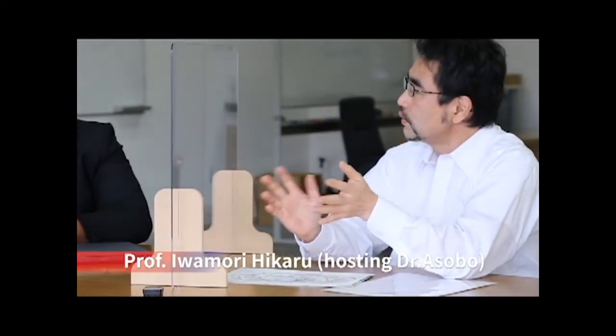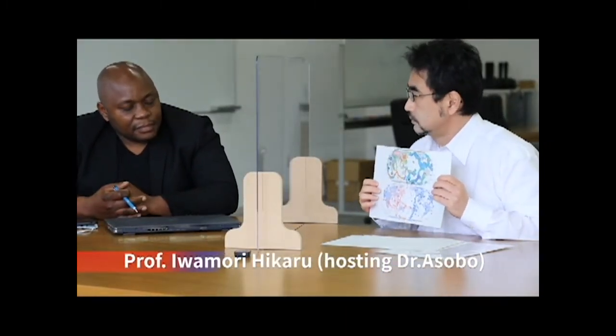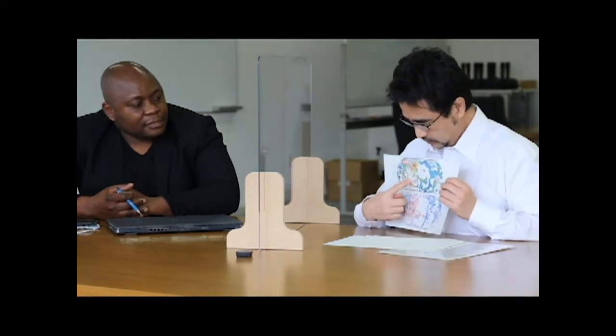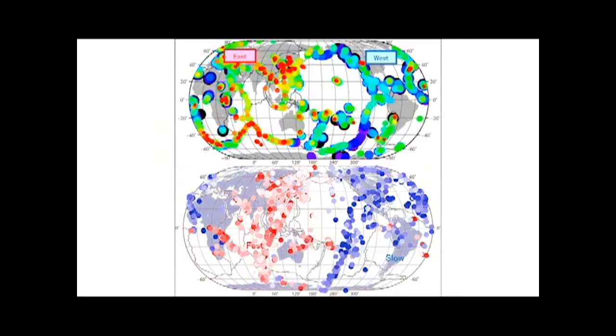The mantle was split into two, half and half. And Japan is in the red zone, but Cameroon is in the blue zone. So it's far away from Japan, the opposite side, and the opposite polarity in the mantle composition.